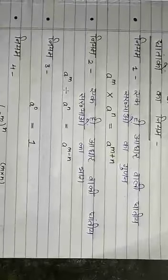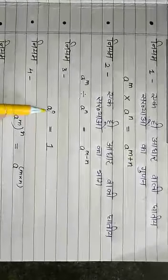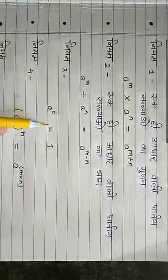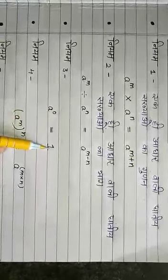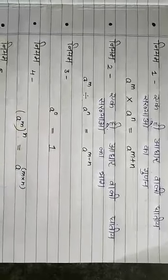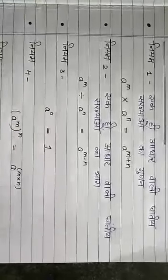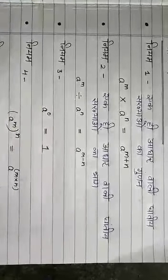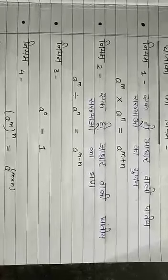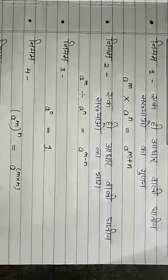अब अगला नियम है — अगर किसी संख्या की घात 0 है तो उसकी value हमेशा 1 होती है। (The next rule is: if the exponent of any number is 0, then its value is always 1.)